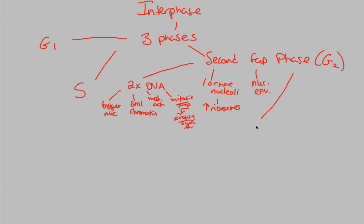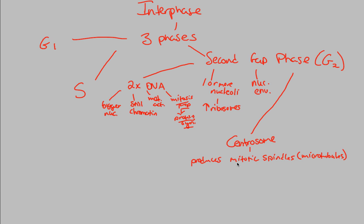The last important point — and really a key take-home message of the second gap phase — is the development of the centrosome. The centrosome is a cell organelle responsible for producing mitotic spindles. Mitotic spindles are simply microtubules, and microtubules do a very important job: they are the specific structures that will literally pull apart those sister chromatids and bring them to separate sides of the cell. That's what the centrosome's job is — to produce the spindles necessary for that pulling apart of chromosomes.